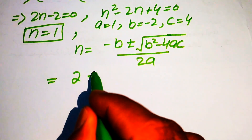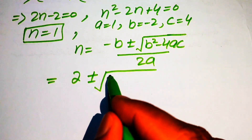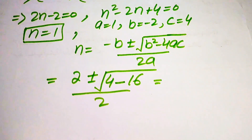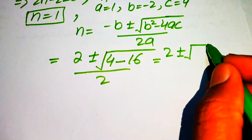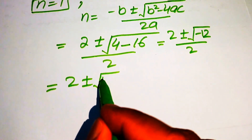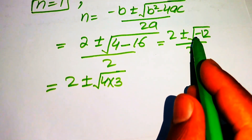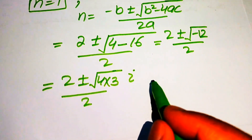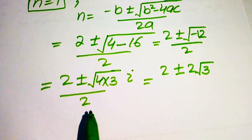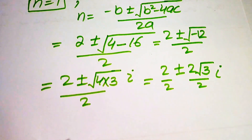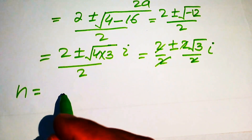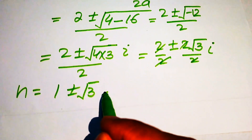Using the quadratic formula, minus b becomes plus 2, plus or minus square root of b squared, where minus 2 squared is 4, minus 4 times a times c equals 16, divided by 2. This simplifies to 2 plus or minus square root of 4 minus 16, over 2, which gives 2 plus or minus square root of minus 12, over 2. Writing minus 12 as 4 times 3 with iota for the negative sign, we get 2 plus or minus 2 root 3 iota over 2. The 2s cancel and we get n equals 1 plus or minus square root of 3 times iota.